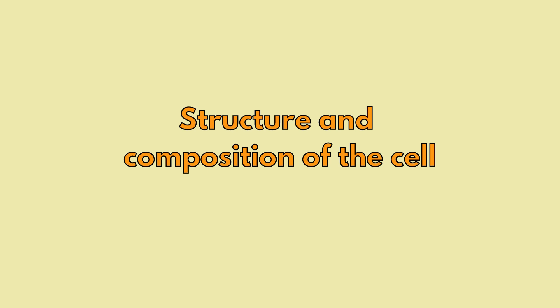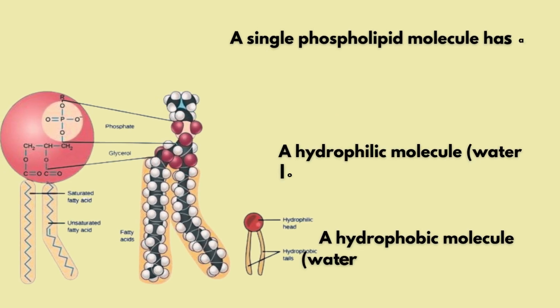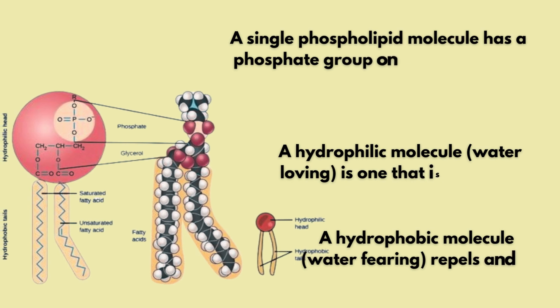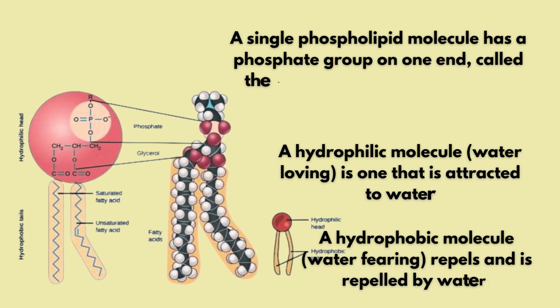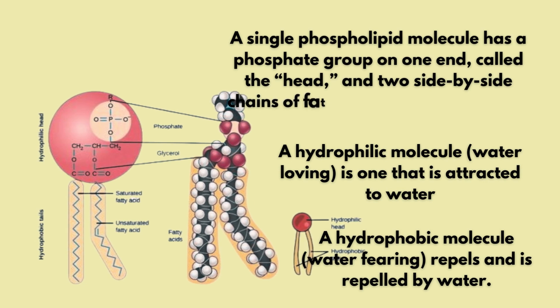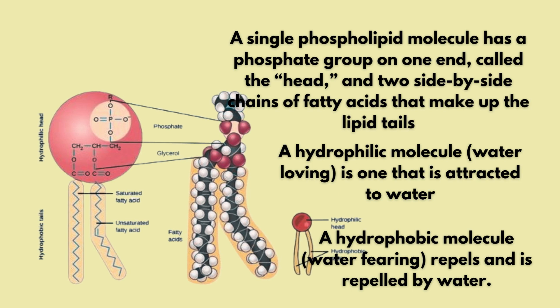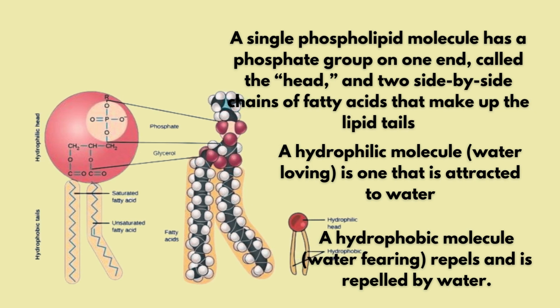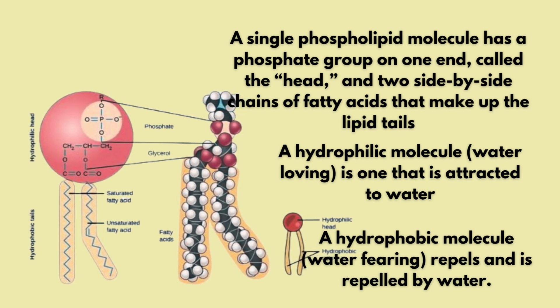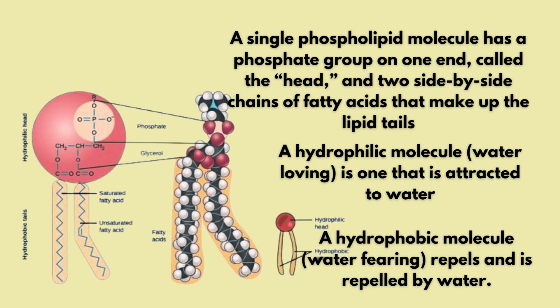Structure and composition of the cell membrane: the cell membrane is formed by phospholipids in a bilayer arrangement throughout the membrane. Also, the cell membrane contains proteins, fats, and lipids like cholesterol. Proteins are scattered throughout the membrane in particular groups.